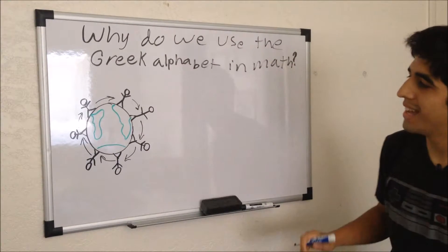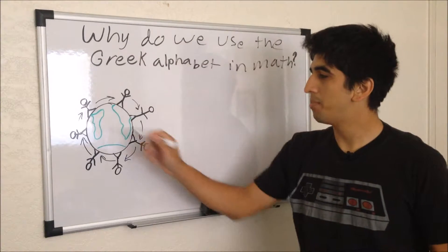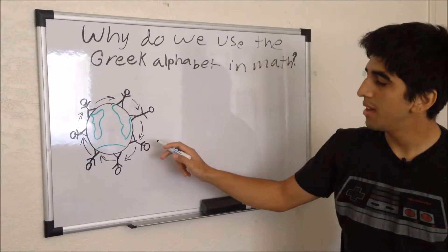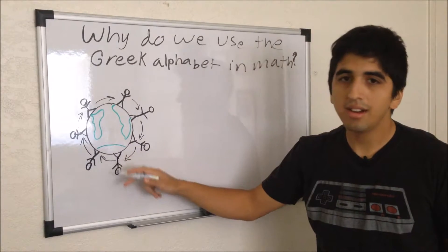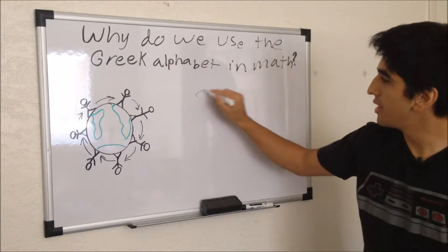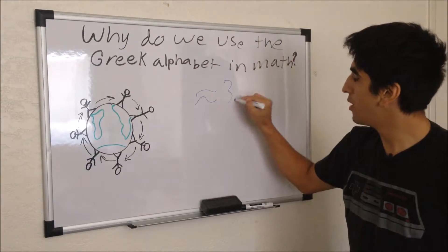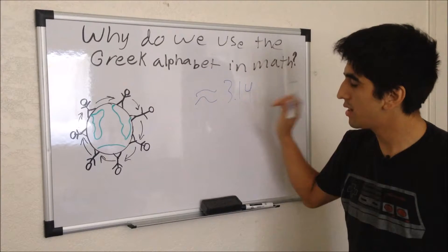Now, what I mean by that is that someone's pi over on this side of the world will mean the same as someone's pi in Antarctica. It's approximately 3.14, it goes on forever.